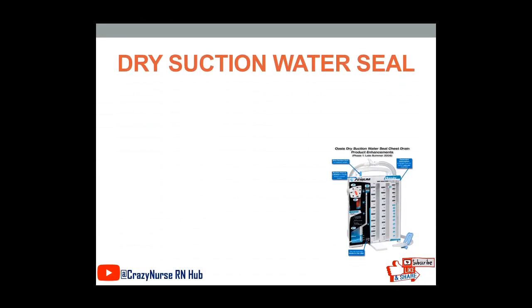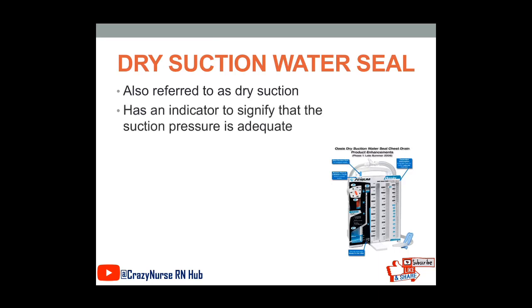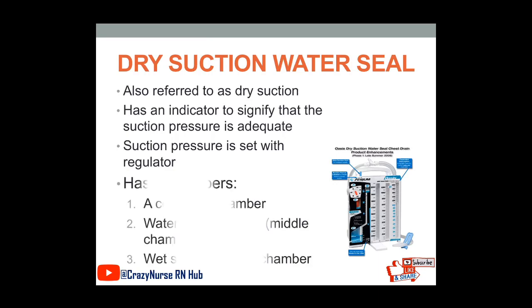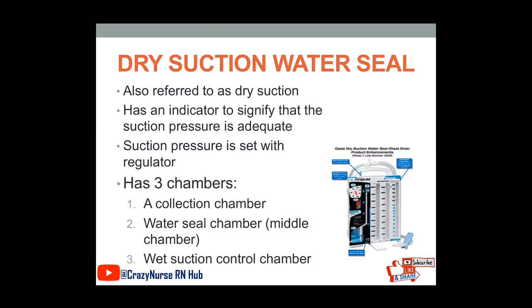We also have dry suction water seal, also referred to as dry suction. It has an indicator to signify that the suction pressure is adequate, and the suction pressure is set with a regulator. It also has 3 chambers: a collection chamber, a water seal chamber in the middle, and a wet suction control chamber.